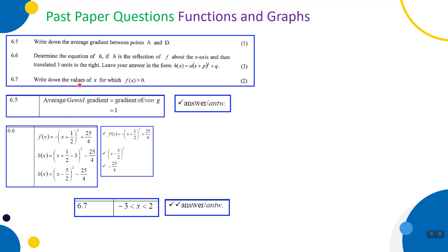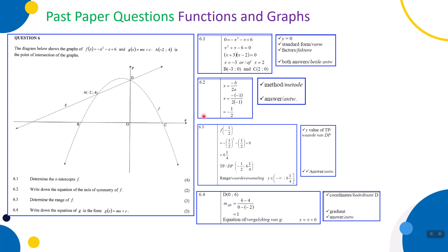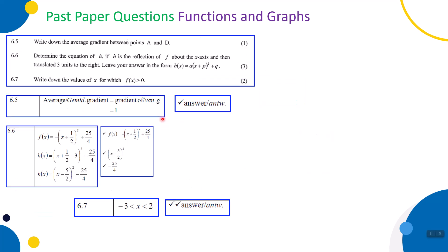6.7, two marks: write down the values of x for which f(x) > 0. Looking at our graph, the x-intercepts are at B(-3, 0) and C(2, 0). The graph is strictly above the x-axis between those two values, not including them. So the answer is -3 < x < 2. Thank you very much for your time, Grade 11. Bye-bye.